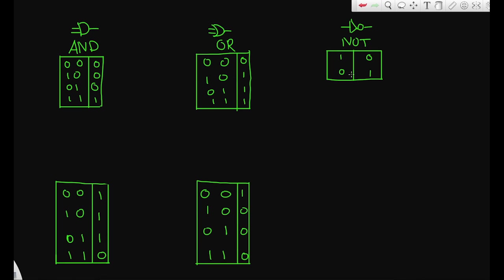So let's say you wanted to make a logic gate that had a truth table like this. This is very similar to an AND gate, except every single one of the outputs is the complete opposite — every single output is inverted.